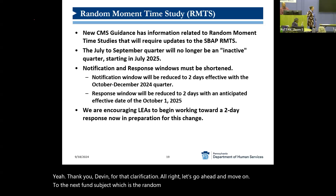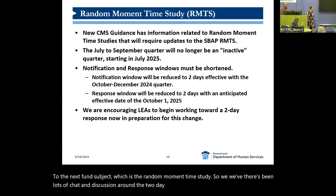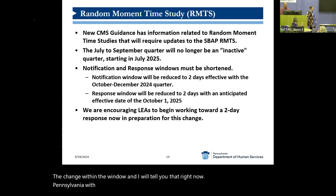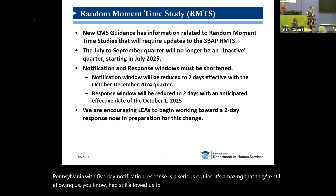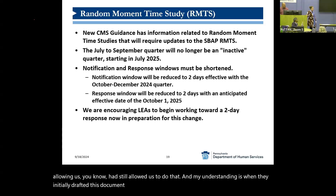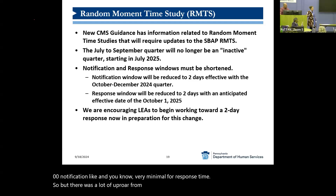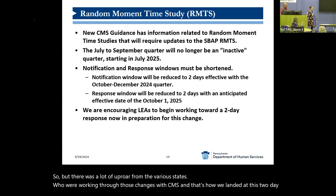There's been lots of chat and discussion around the two-day window for the random moment time study. Pennsylvania with its five-day notification response is a serious outlier — it's amazing they've still been allowed to do that. When they initially drafted this document, they wanted to go to zero notification and very minimal response time. But there was a lot of uproar from various states, and that's how we landed at two-day notification and two-day response.